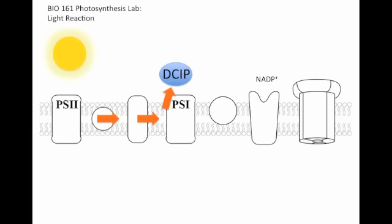So it's going to take those electrons, and that's what's going to reduce the DCIP and cause it to become clear. And we can watch that happening with the spectrophotometer.